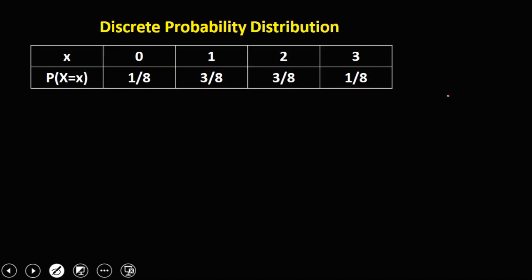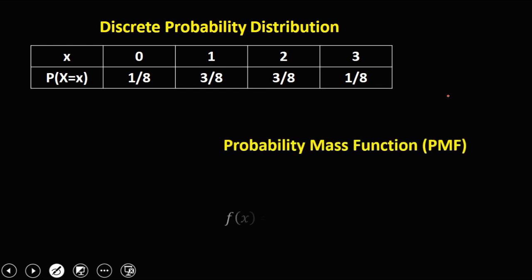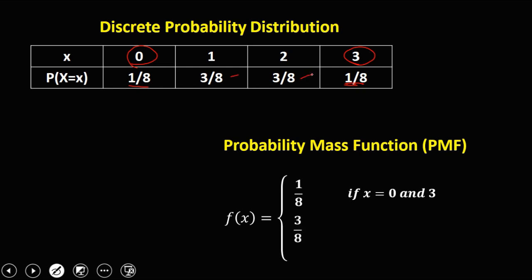For the next distribution, convert this one into a PMF. The probability is 1 over 8 if x is 0 and 3, then 3 over 8 if x is 1 and 2, then 0 otherwise. So this is how to convert a discrete distribution to a probability mass function.